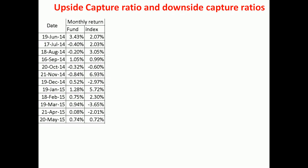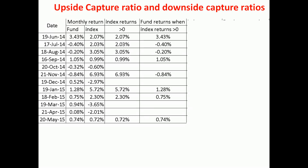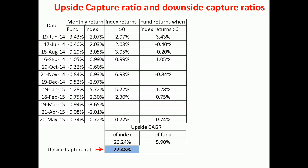Now, suppose that's the set of monthly returns. I've used some random dates to calculate the monthly return of the fund and the index. I first ask: what were the months in which the index returns were greater than 0? And then I ask: when the index returns were greater than 0, what were the fund returns? I have these specific data here. I then go on to calculate the CAGR of those positive index returns — that is 26.24%, which is the example I just showed you.